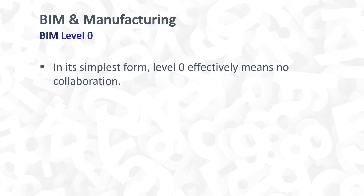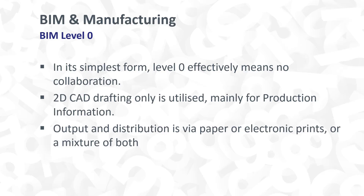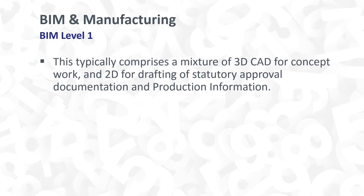BIM level zero is the lowest common denominator — effectively there is no collaboration. Any work that is done is via 2D CAD drawings, either for production or information, and this is normally distributed via paper, fax, or some kind of electronic prints, or any mixture of both. Generally there is no collaboration.